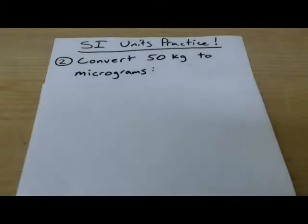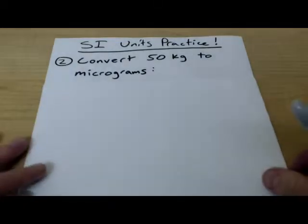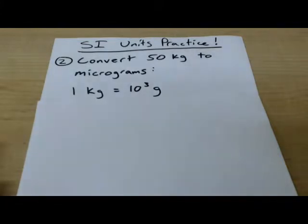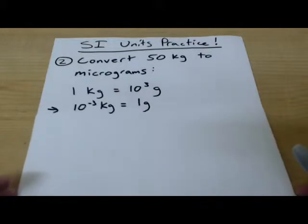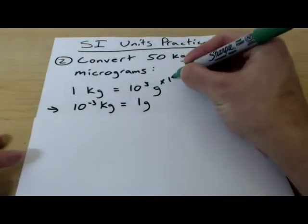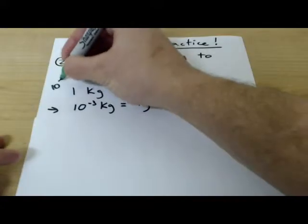So our second problem is along the same vein as the first one, but it's a little more difficult. Convert 50 kilograms to micrograms. And so I'm going to start the same way as the last one. Which is to say that one kilogram is equal to ten to the third grams. And again, this is from the table that I showed earlier. And so ten to the negative third kilograms equals one gram. And again, how I got that is I multiplied both sides by ten to the negative third.